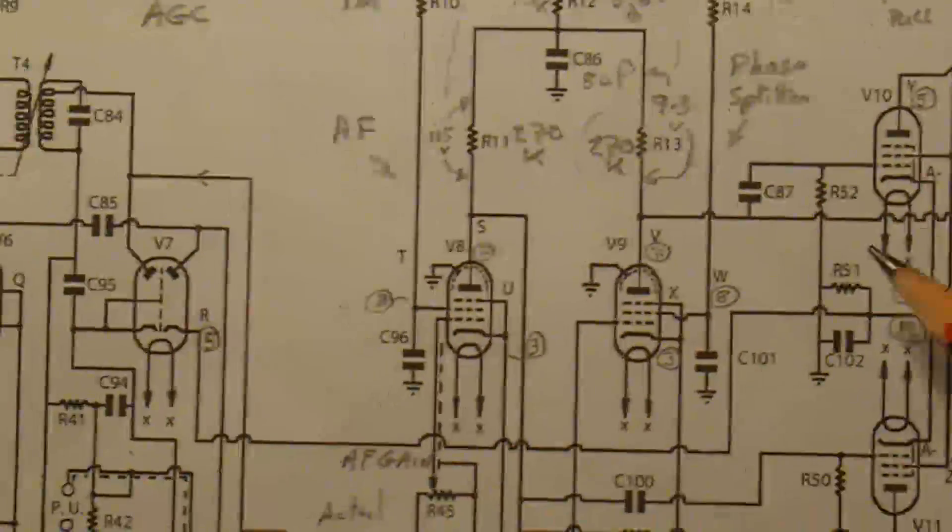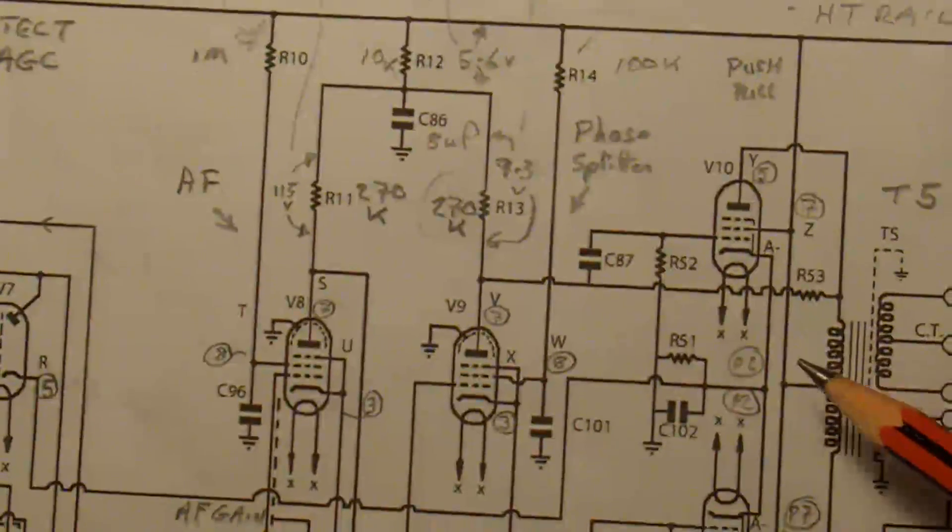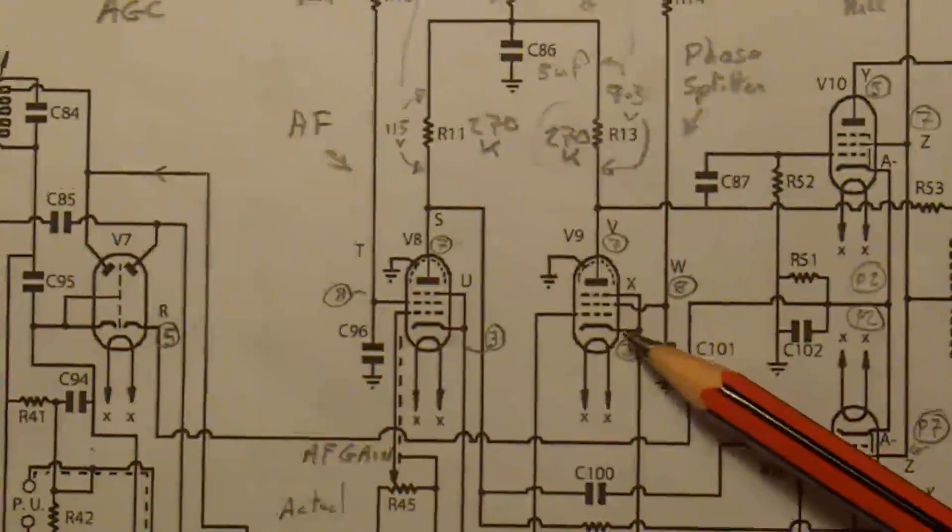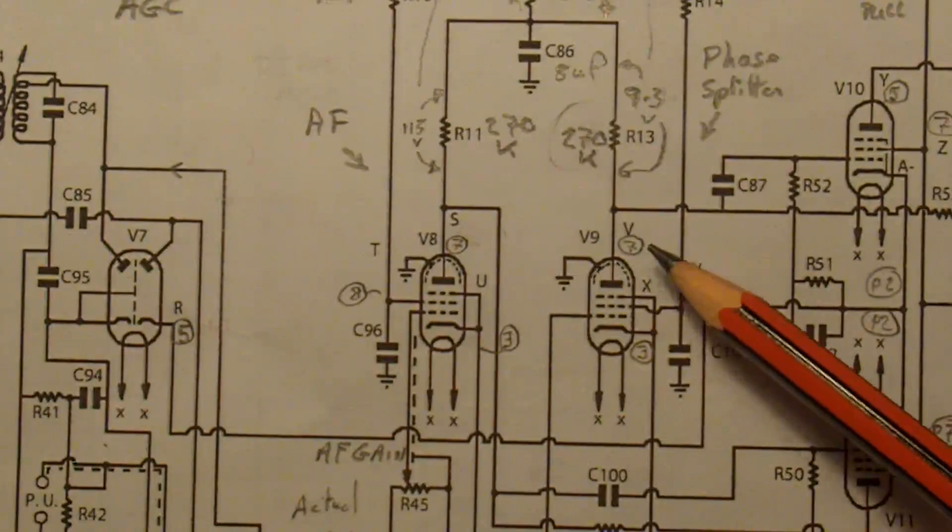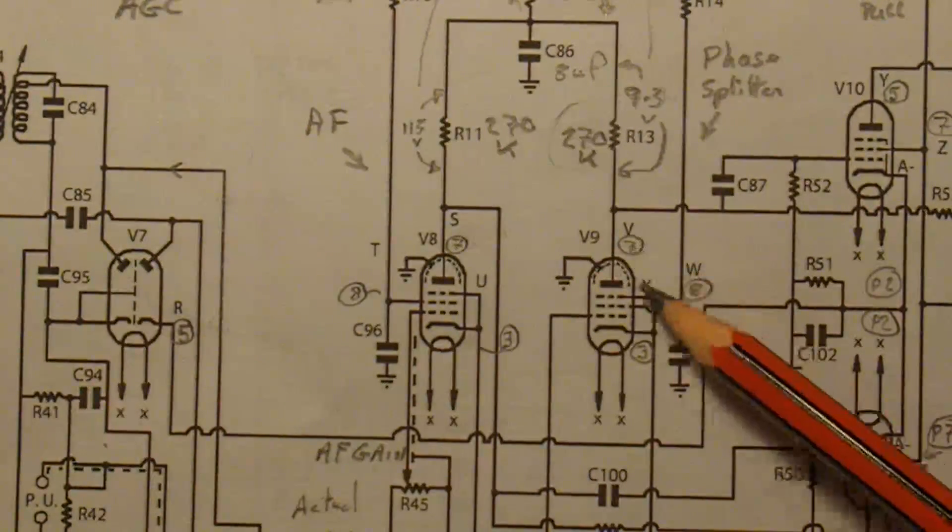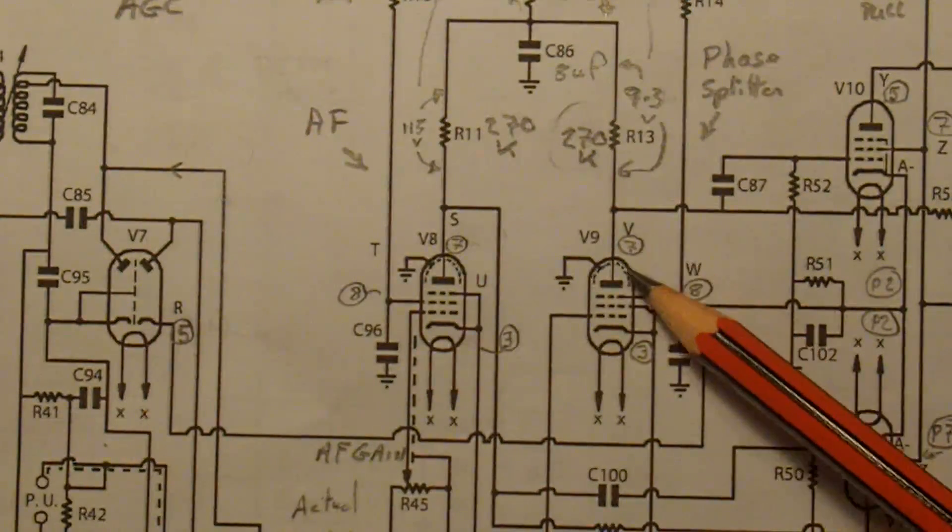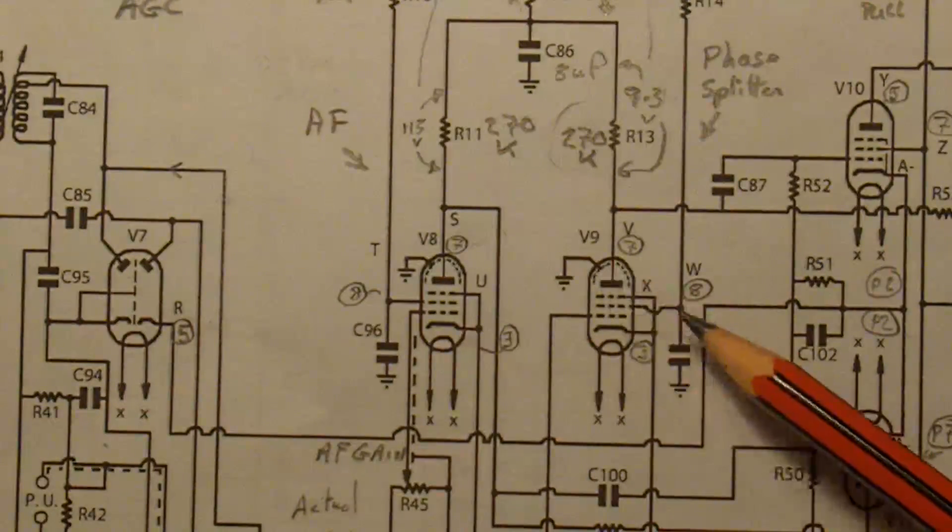And then test point V on the circuit diagram, just to make sure I'm getting that in the right place. Okay, that's the anode of the splitter there, so pin 7 of V9.